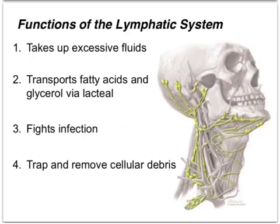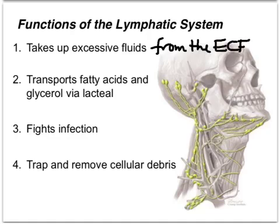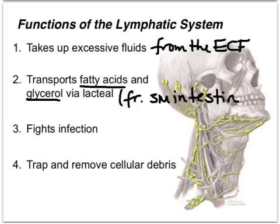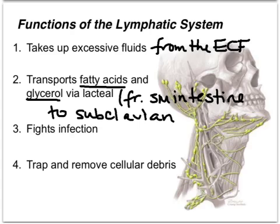There are four functions of the lymphatic system in Biology 12. The first is to take up excess fluids from the ECF. The second is to transport fatty acids and glycerol — the monomers of lipids — via the lacteal, which is located in the villi of the small intestine, delivering them to the subclavian vein, where the lymphatic system meets back up with the circulatory system.